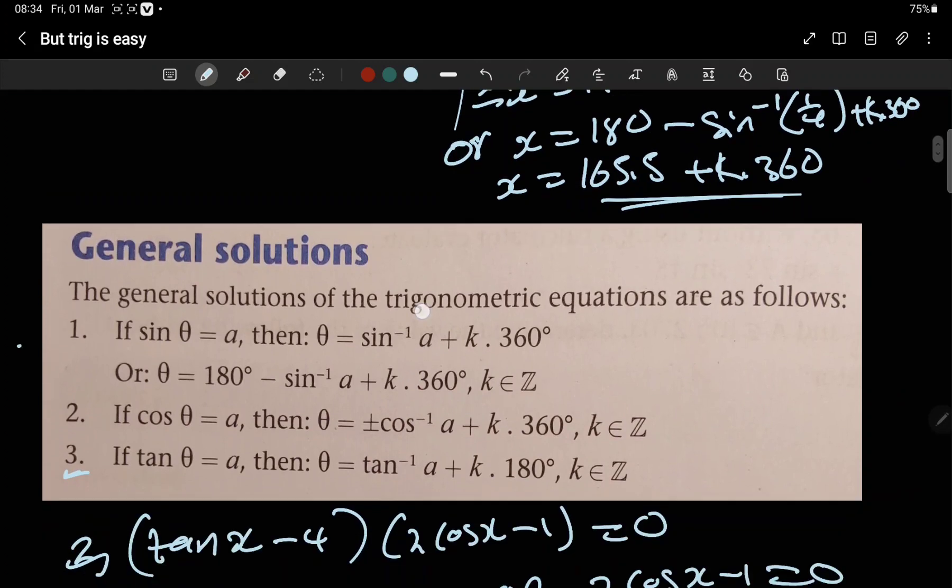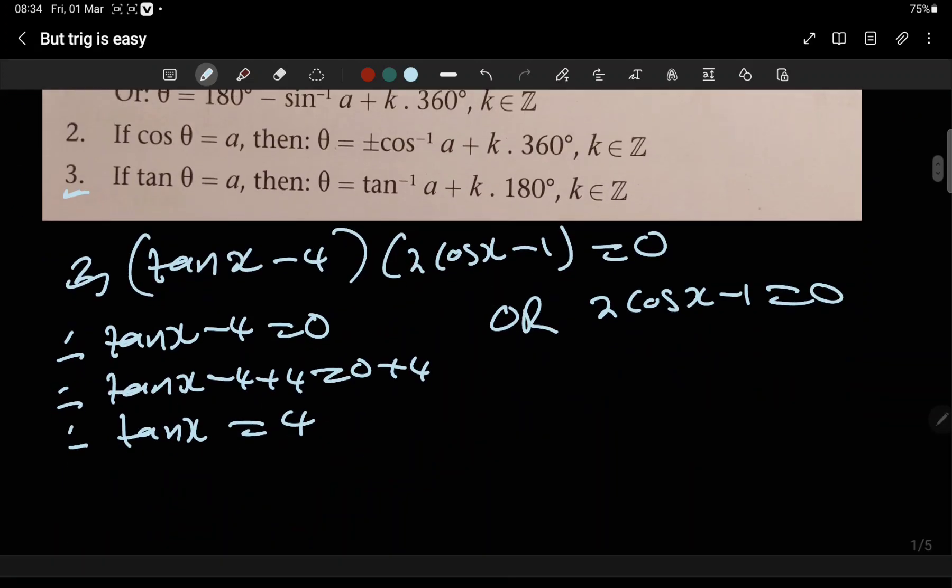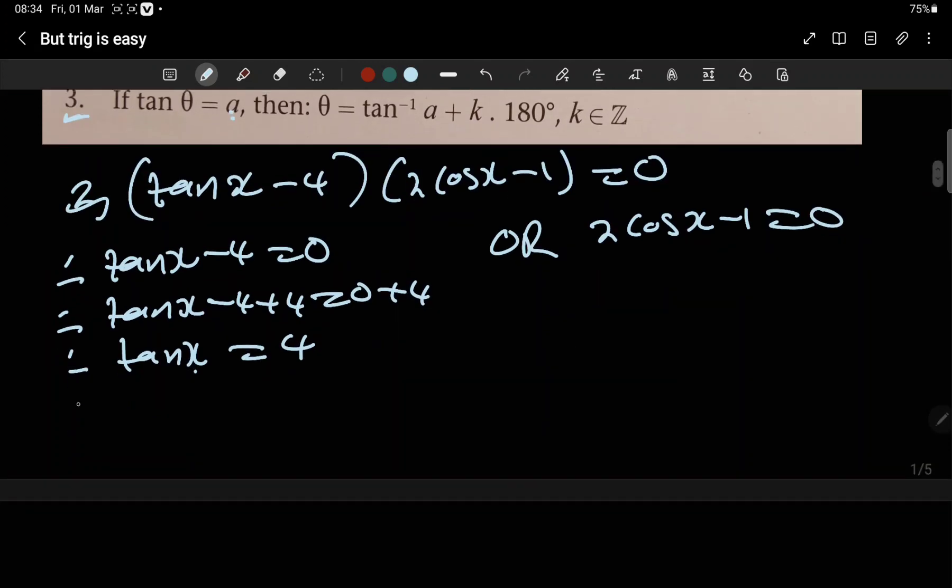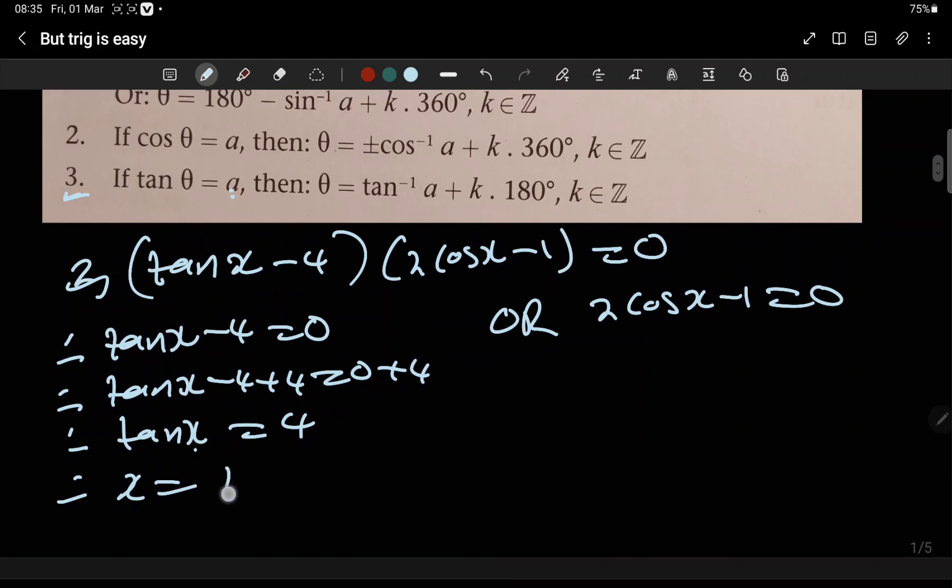Let's check. If tan(θ) equals a, remember, then our θ—it's x, our a is four—therefore θ equals... So therefore x equals arctan of four.